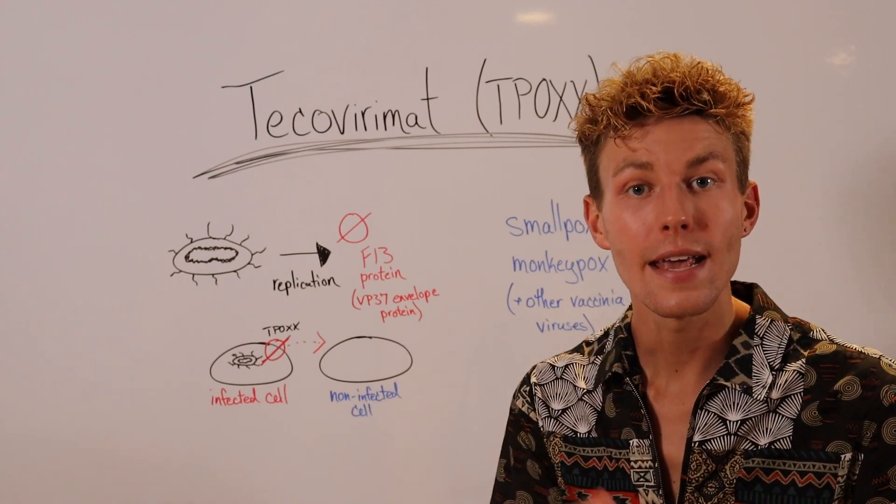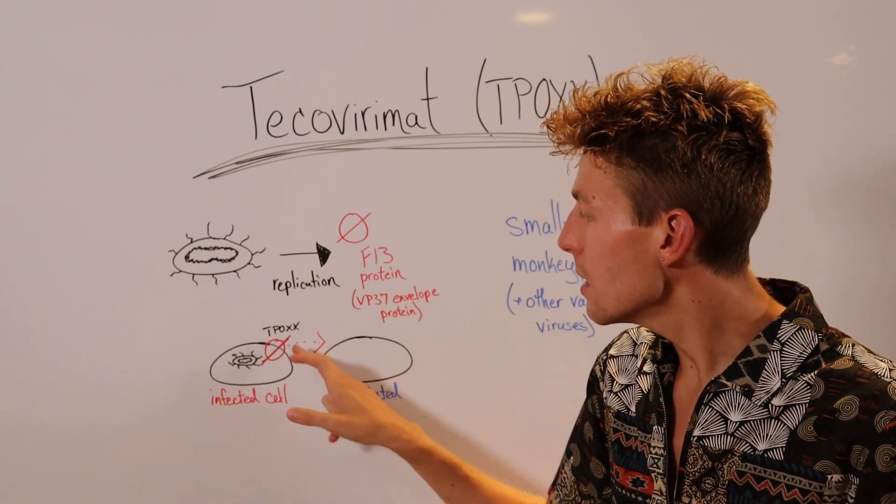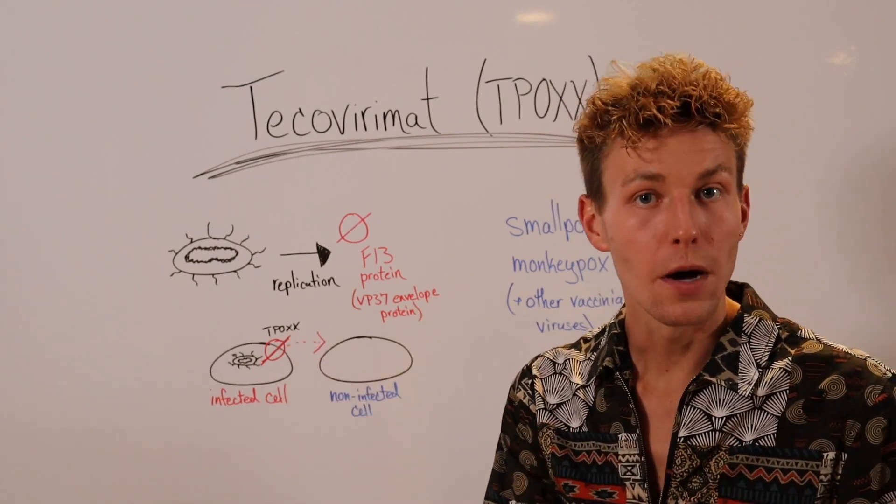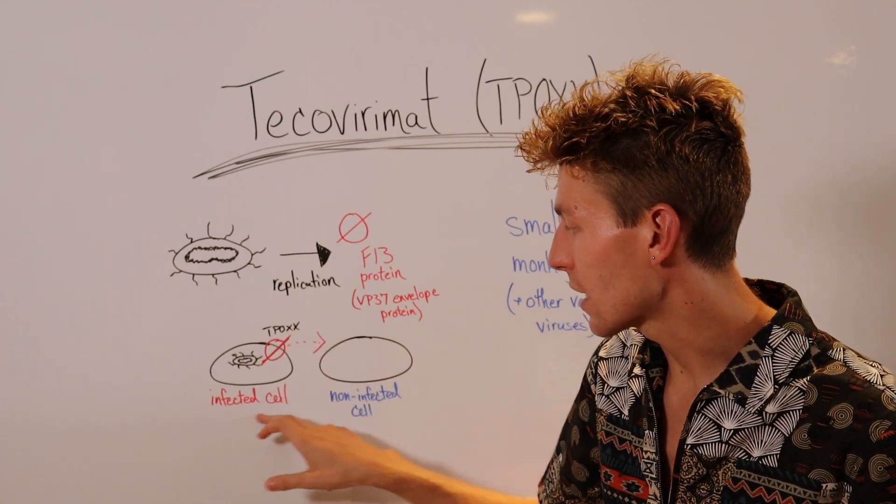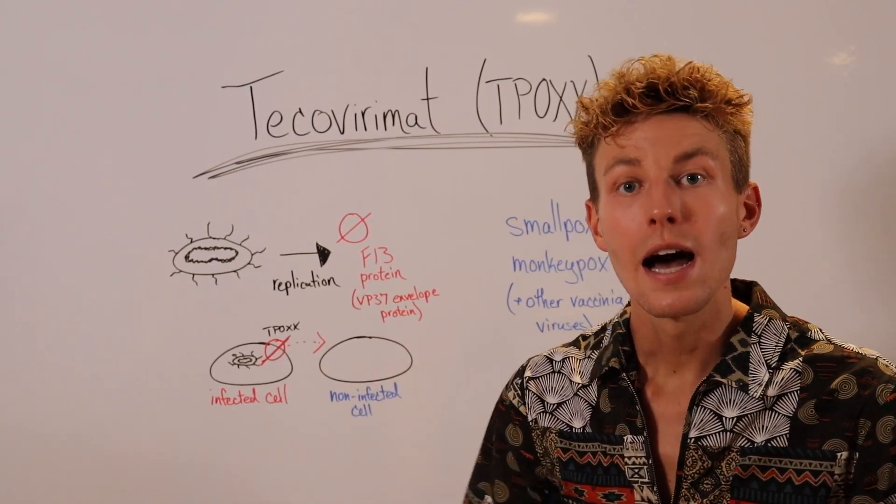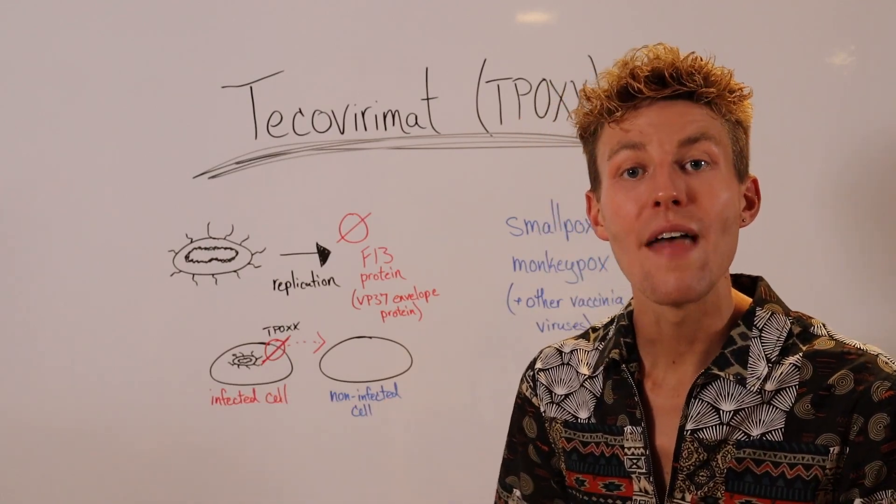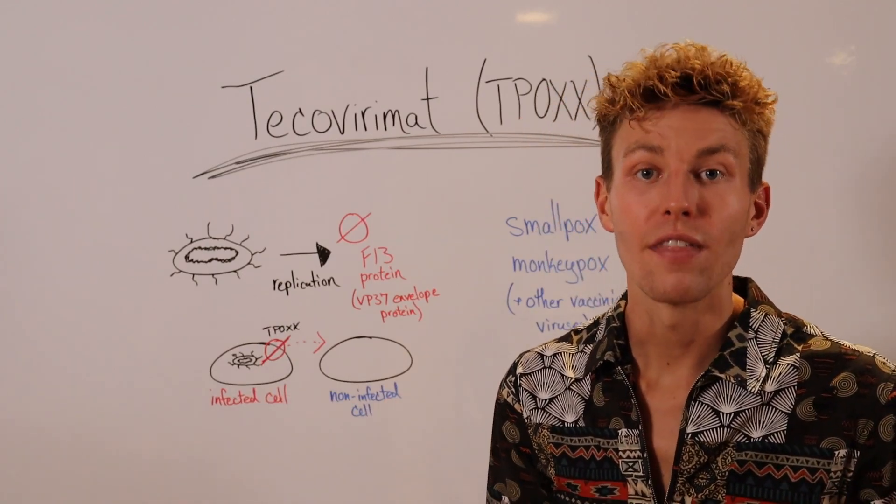So when an individual is infected with the smallpox virus, they are given T-Pox. T-Pox blocks that smallpox virus from leaving the infected cell, and now their non-infected cells are essentially safe from infection, allowing the body to clear out these infected cells faster and reducing the severity of that disease.